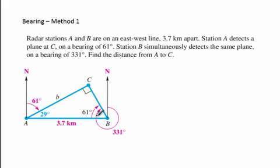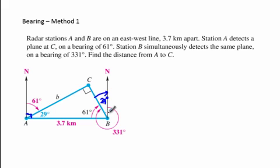Since A and B are on an east-west line and we're looking north from A, that angle must be 90 degrees. So 90 minus 61 gives us 29 degrees for the interior angle at A. For station B, the full circle is 360 degrees, so 360 minus 331 is 29 degrees for the interior angle at B. Then 90 minus 29 gives 61 degrees inside the triangle. Since 29 plus 61 equals 90, the remaining angle must be 90 degrees, confirming we have a right triangle.